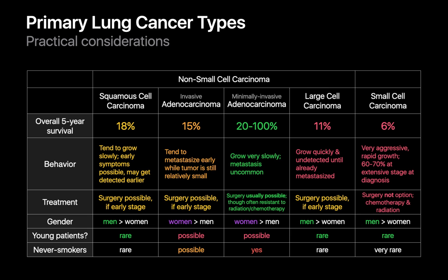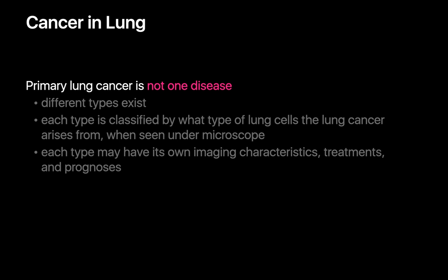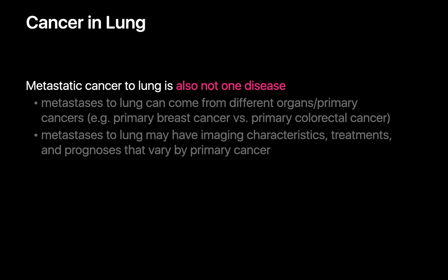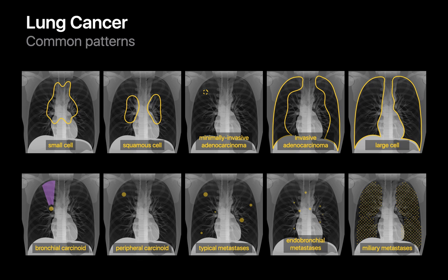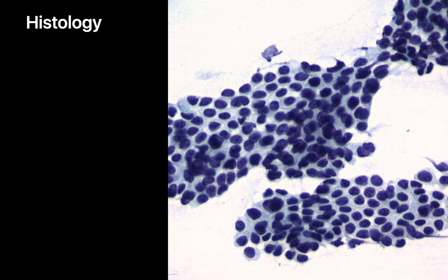To summarize our take-home points: primary lung cancer is not one uniform disease. Different types exist and are classified by what type of lung cells went bad, and each type may have its own imaging predispositions, treatment, and prognosis. Likewise, metastatic cancer to lung is not one uniform disease — they may come from primary cancers of practically any organ in the body, present in slightly different ways, require different treatments, and come with different prognoses. Location and distribution of malignancy in the lung can give us a preliminary hint as to diagnosis, but ultimately the diagnostic process is a multidisciplinary task involving radiologists, pulmonologists, surgeons, and pathologists.